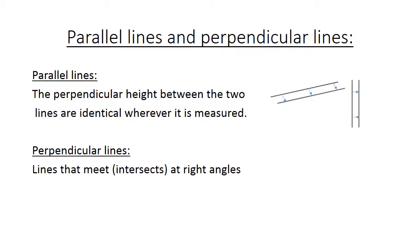Perpendicular lines. Lines that meet or intersect at right angles. All of the lines will have a 90 degree angle there.